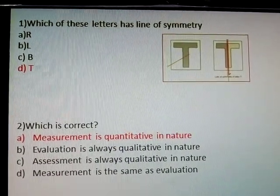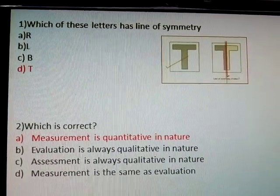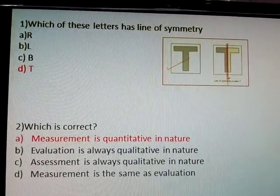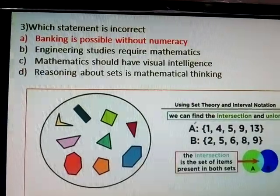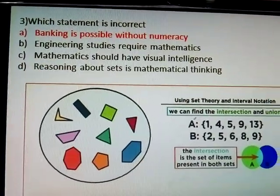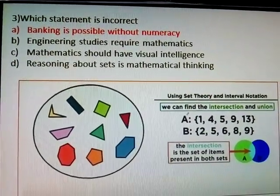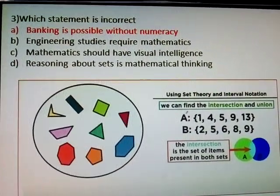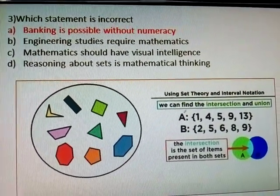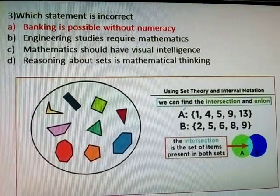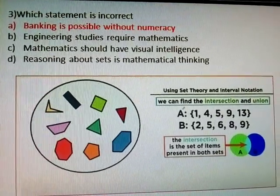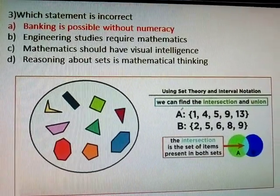Answer A: Measurement is quantitative in nature. Which statement is incorrect? Answer A: Banking is possible without numeracy.